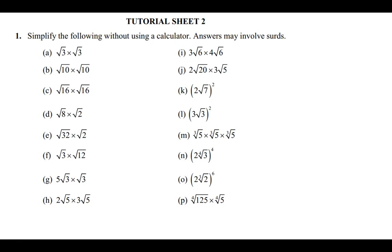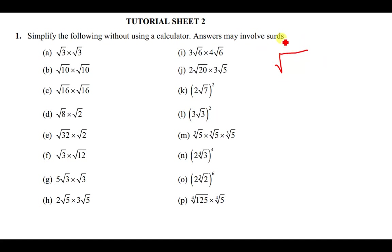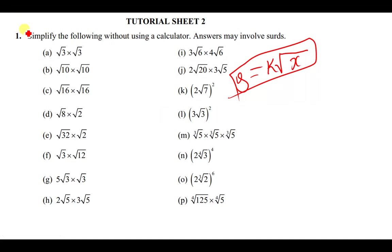Let's begin to solve the questions. Question one from tutorial sheet two says: simplify the following without using a calculator — answers may involve surds. Surds are simply numbers that contain a root. Some books call it a root and some call it a surd. We can have √x, or a constant, or an equation like y = √x.